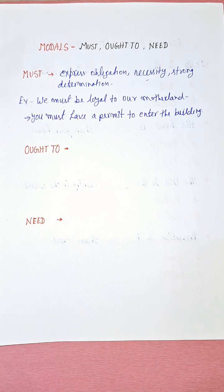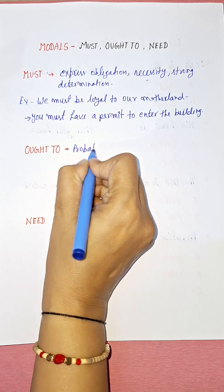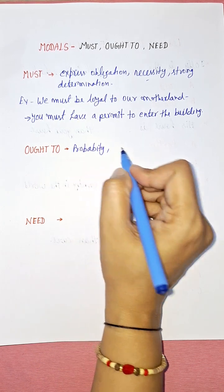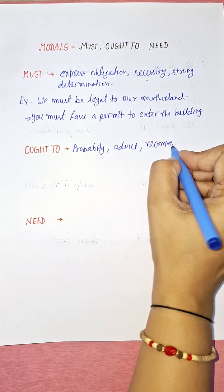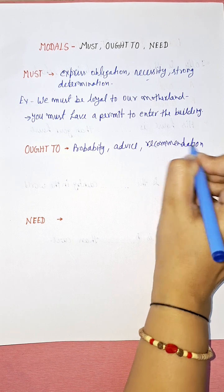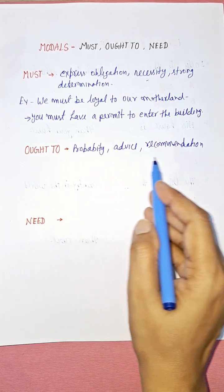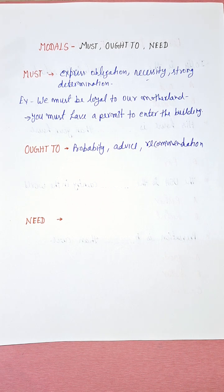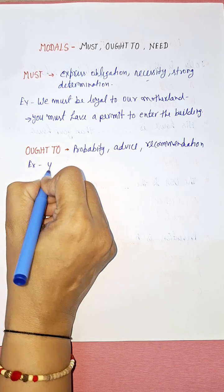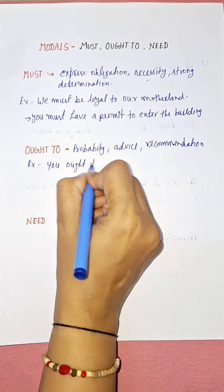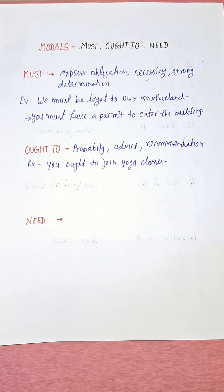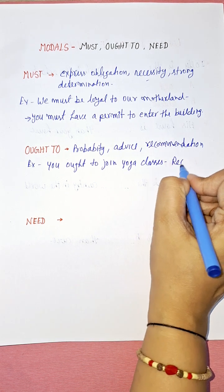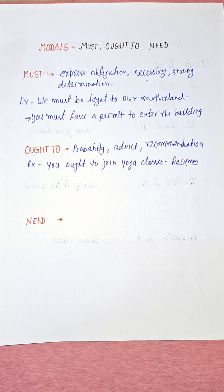Now let's talk about 'ought to.' This modal is used to make recommendations, express probability, and give advice. For example, we can say: 'You ought to join yoga classes.' This is a recommendation — it is someone's recommendation that you ought to join yoga classes.